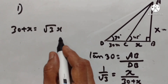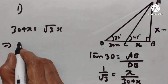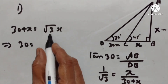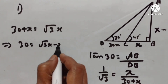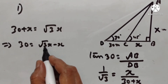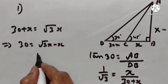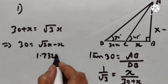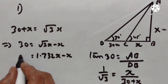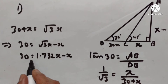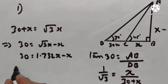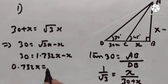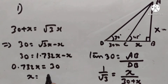30 plus x is equal to square root of 3 times x. So 30 is equal to square root of 3 times x minus x. Square root of 3 is equal to 1.732, so 1.732x minus x gives 0.732x is equal to 30. Therefore x is equal to 30 divided by 0.732.